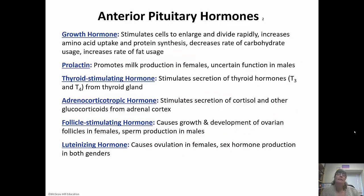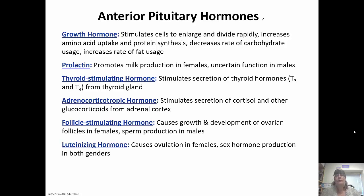Growth hormone stimulates cells to enlarge and divide rapidly, increases protein synthesis, decreases carbohydrate use, increases fat usage, and increases amino acid uptake important for protein synthesis. Prolactin promotes milk production in females. Thyroid stimulating hormone stimulates secretion of thyroid hormones from the thyroid. Adrenocorticotropic hormone stimulates secretion of cortisol and other glucocorticoids from the adrenal cortex. Follicle stimulating hormone causes growth and development of ovarian follicles in females and sperm production in males. Luteinizing hormone causes ovulation in females and sex hormone production in both genders.